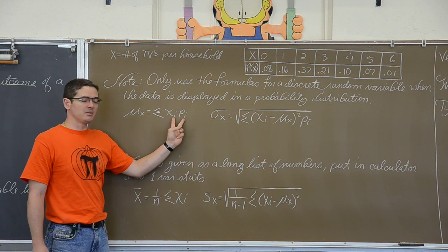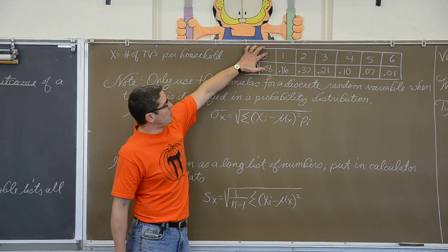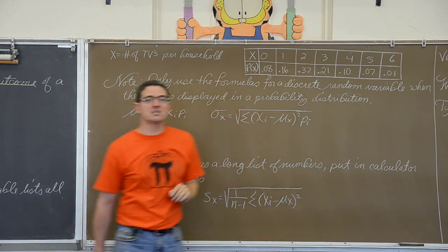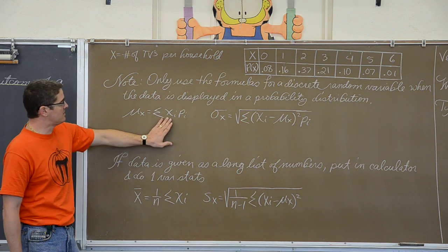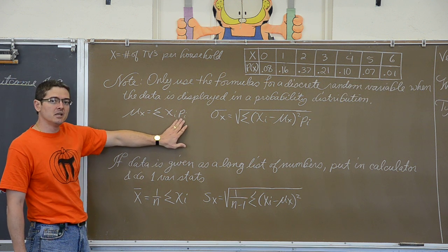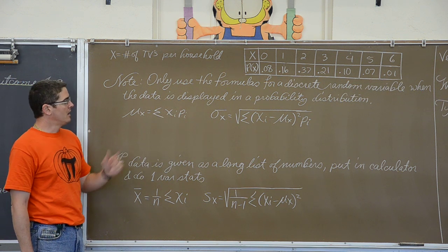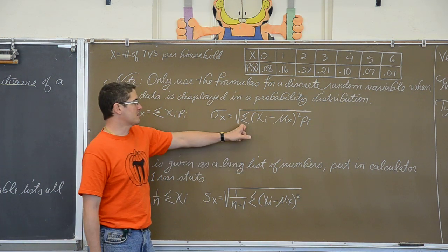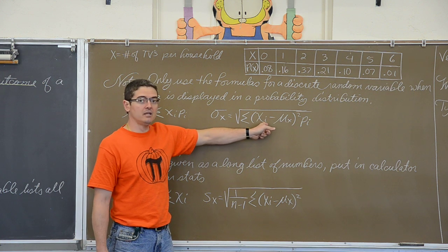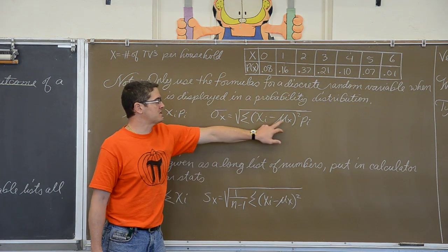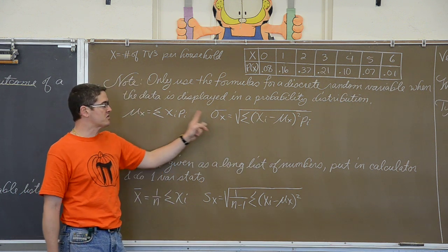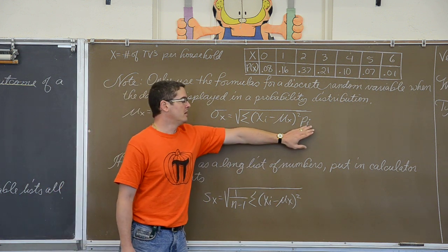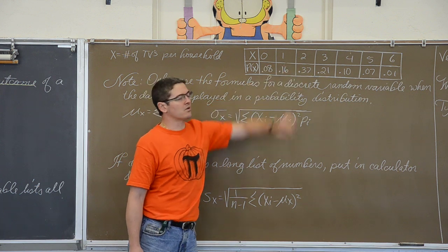These subscripts simply mean where you are on the list: x-sub-1 times p-sub-1, x-sub-2 times p-sub-2, x-sub-3 times p-sub-3, and so on. You take the individual outcomes times the individual probabilities and add them all together. The standard deviation of x equals the square root of the summation of x-sub-i minus the overall mean of x, that difference squared, then multiplied by the probability of each individual outcome. You must find the mean before you can find the standard deviation.